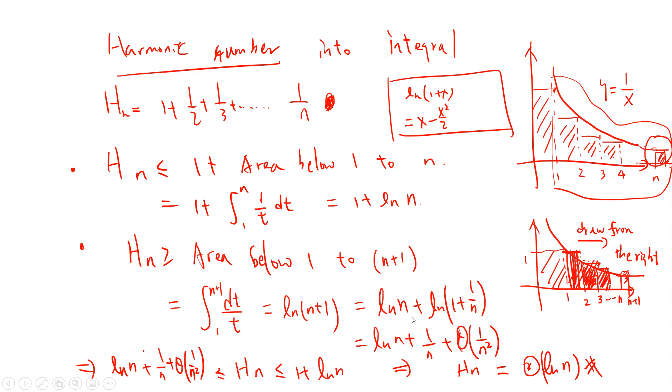And you can write as log n plus log(1 + 1/n). So it's log n plus 1/n plus Θ or big O of 1/n². If you see this, it's like log n plus 1/n plus 1/n² less than H_n and 1 plus log n. So if you see if n increases, then obviously H_n will be Θ(log n).